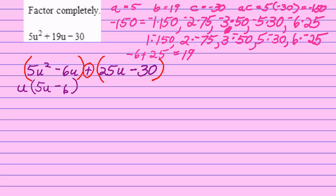Remember to check yourself, just distribute. U times 5u is 5u squared, and u times 6 is 6u, or if you want to be exact, u times negative 6 is negative 6u. Now be sure to copy down your plus sign, never forget to write it.